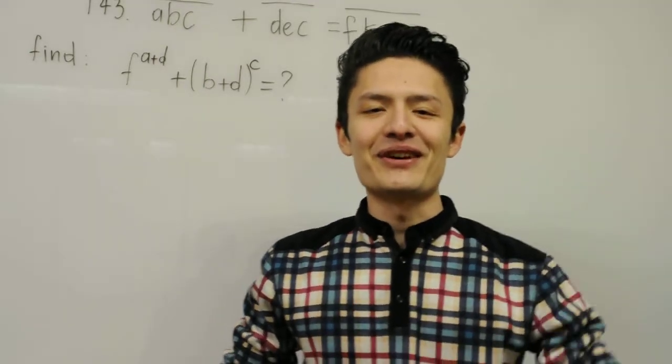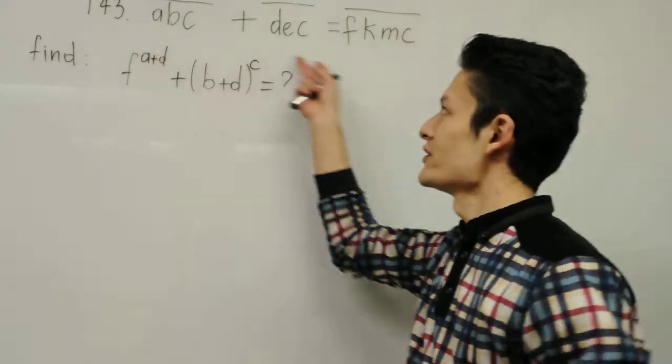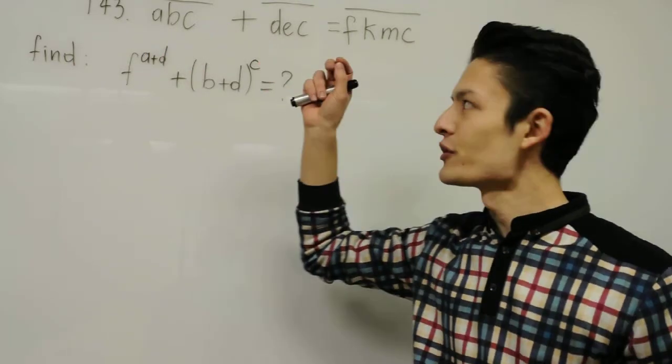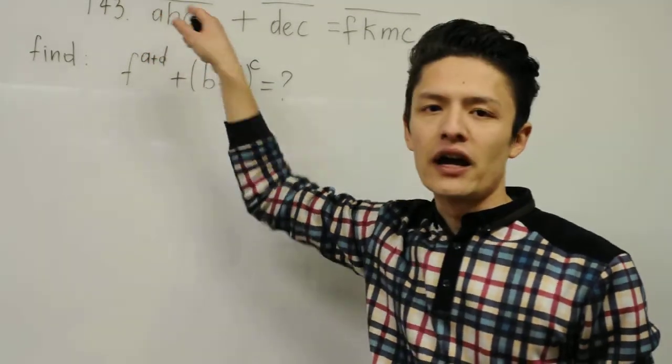Hey everyone, now we're back to another problem, problem number 143. So we have this condition, ABC plus DEC is equal to FKMC. And you might be wondering now, what this line above means?